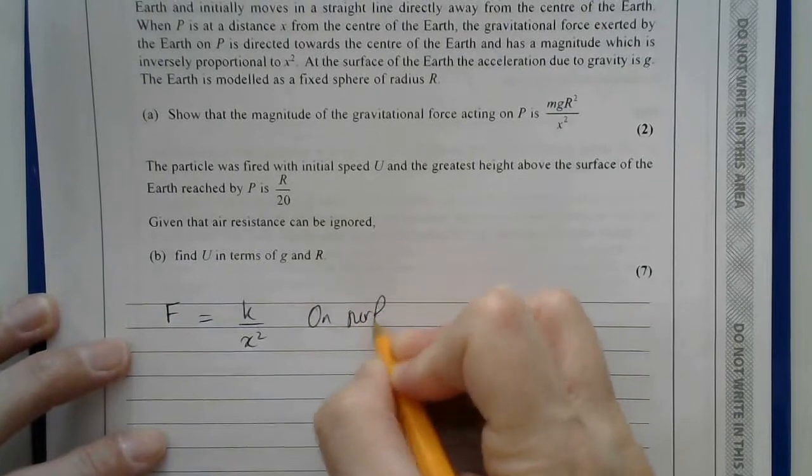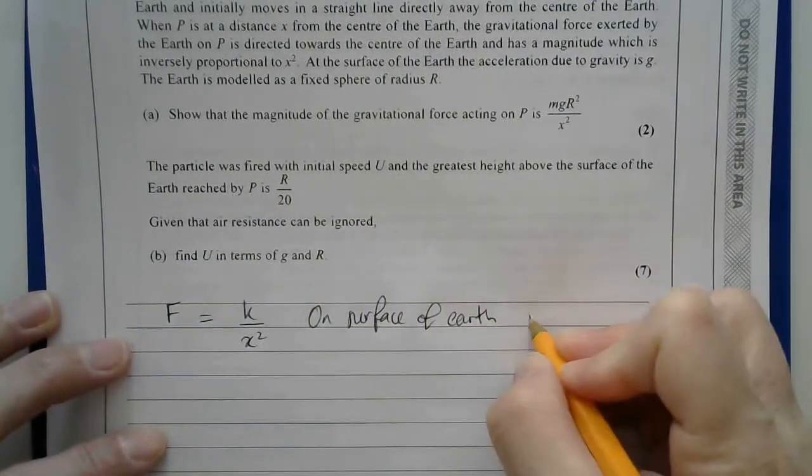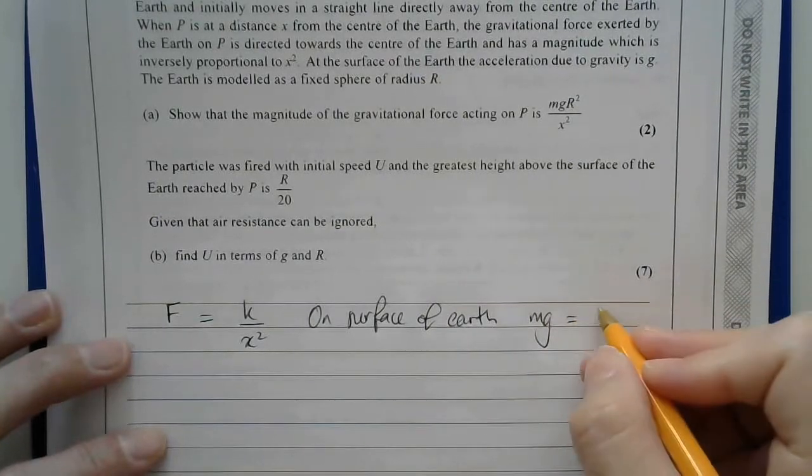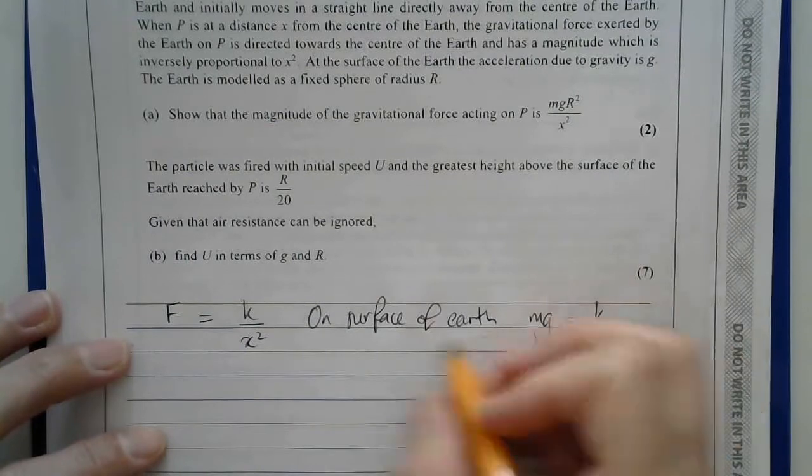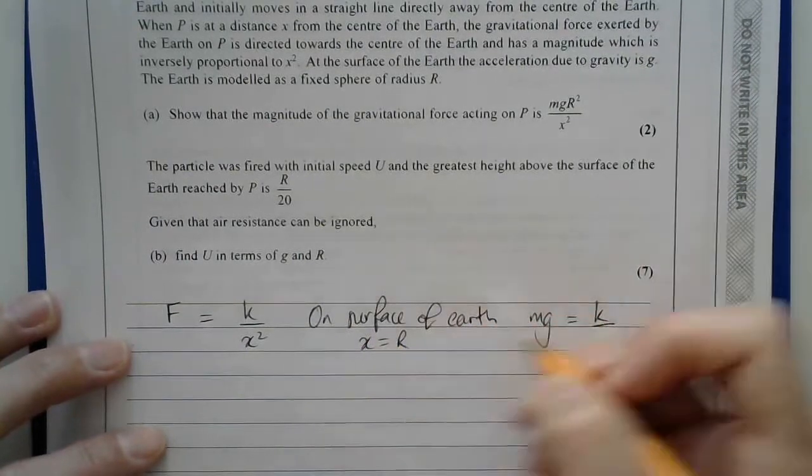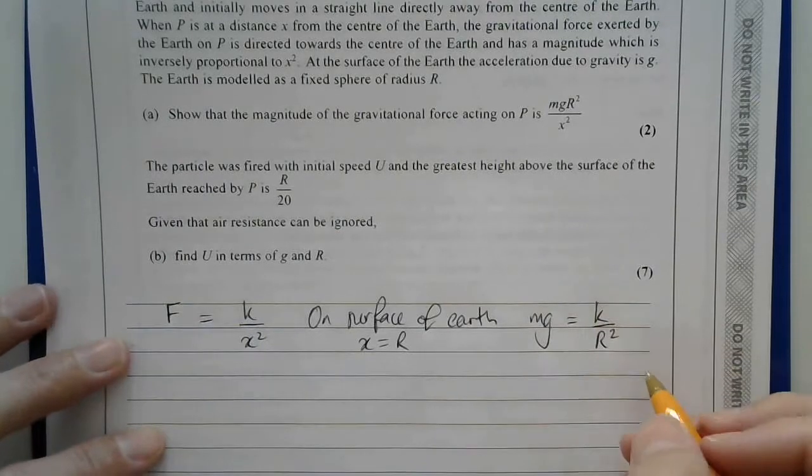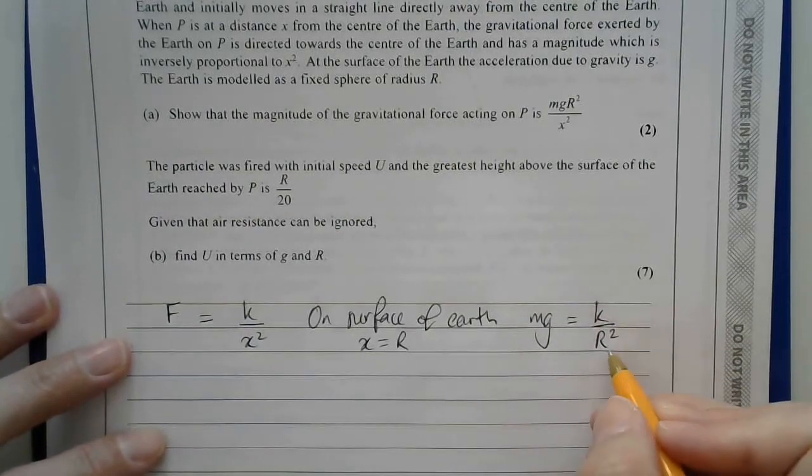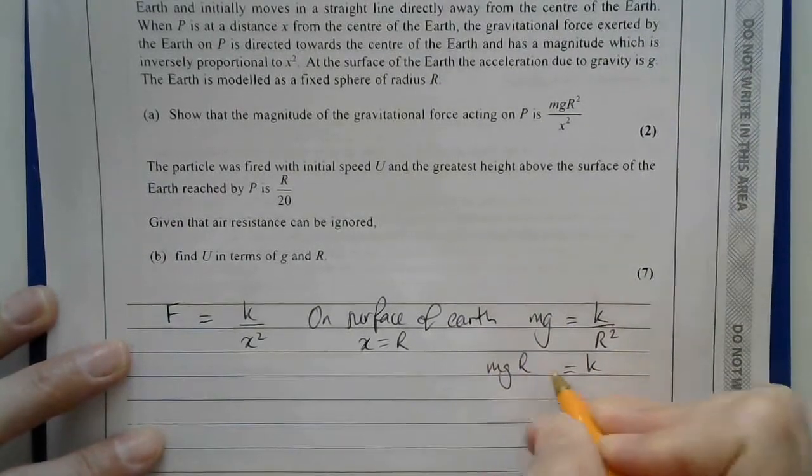So on the surface of the Earth, I know that that force is mg. So mg is equal to k over x-squared. But on the surface of the Earth, x equals r. So therefore, I end up with this expression here, this equation, mg equals k over r-squared. And rearranging, I get that the k is mg r-squared.